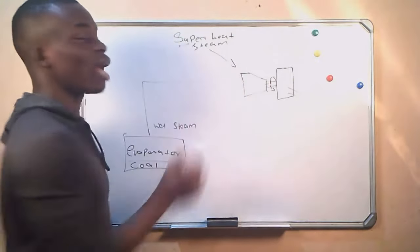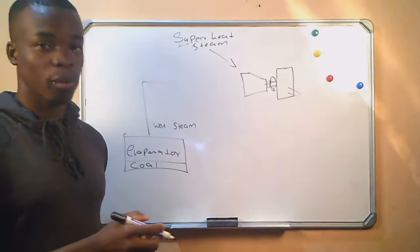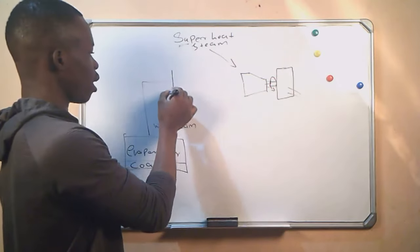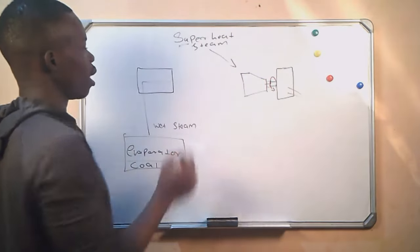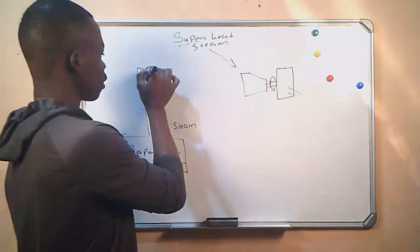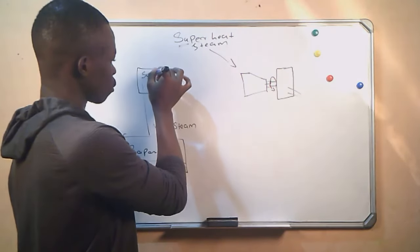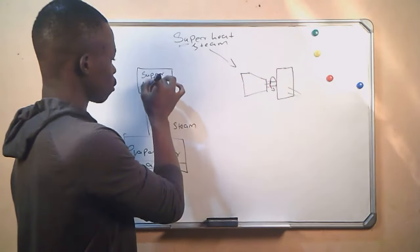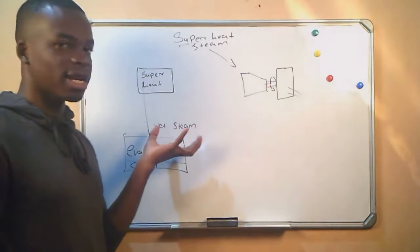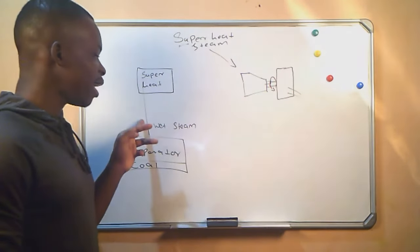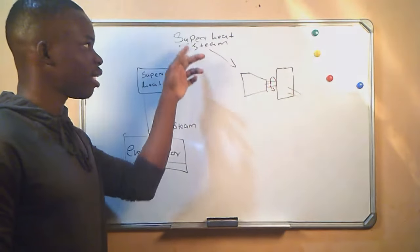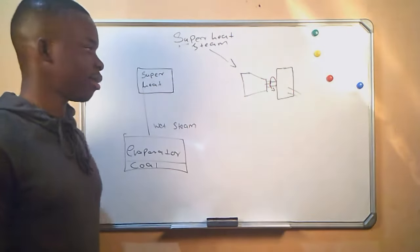But here we are looking for superheated steam. So we introduce an instrument called the superheater. A superheater will add heat energy to the wet steam and convert it to superheated steam.